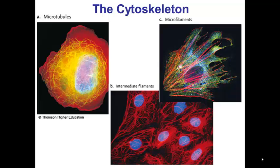Here you can see images showing each of the three cytoskeletal polymers. First we have the microtubules, which are the widest in diameter. You've already been introduced to the microtubules in the mitosis chapter because the microtubules make up the spindle which separates the chromosomes. In addition, the microtubules are also involved in maintenance of cell shape. The next widest cytoskeletal polymer is the intermediate filaments, which are primarily involved in resistance to mechanical stress and they provide a lot of strength.